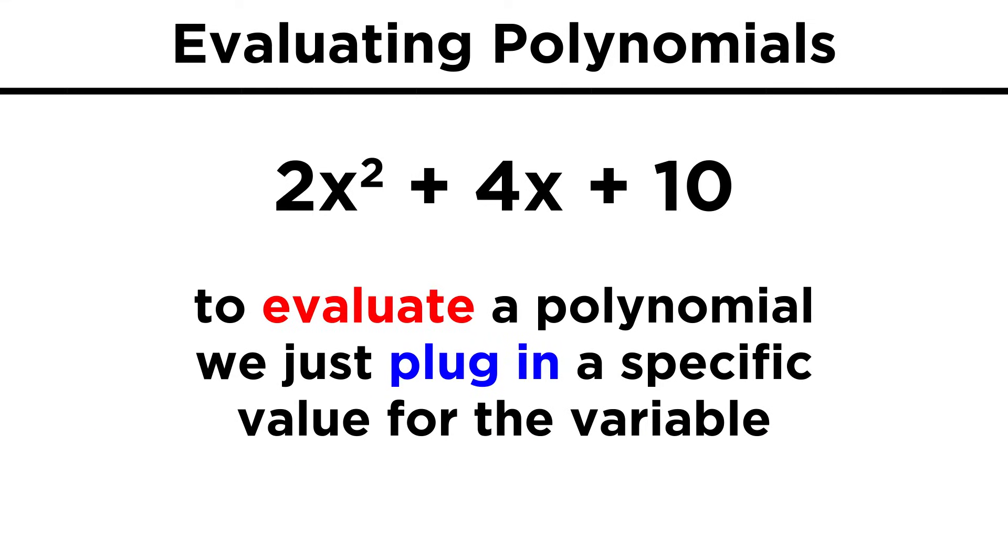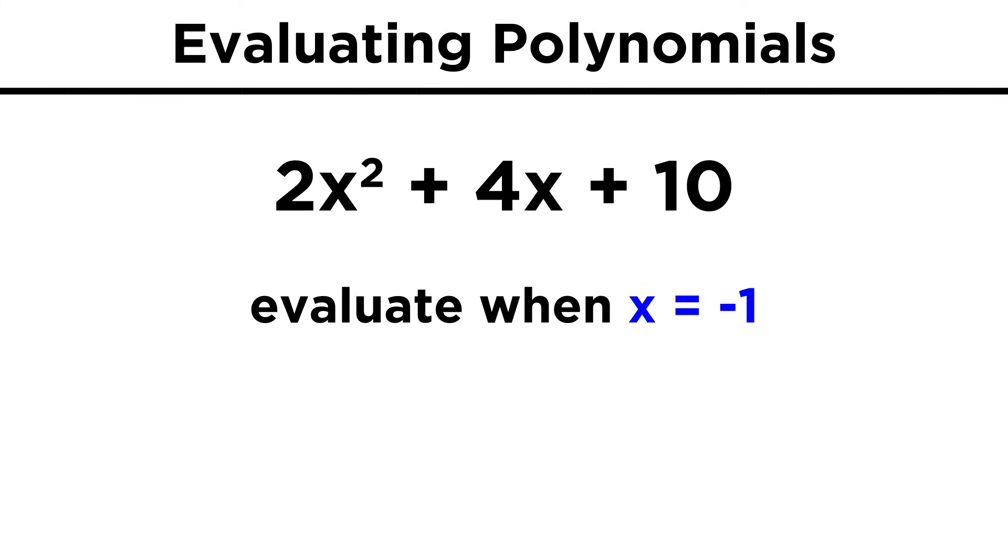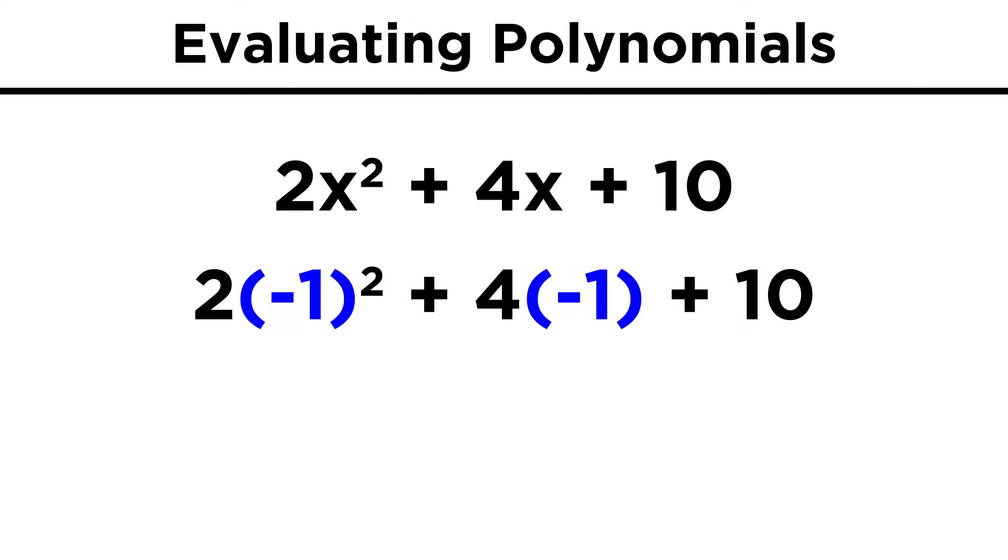If we want to evaluate a polynomial for a specific value of x, it's pretty easy. We just have to plug in that value everywhere we find x. Using the previous expression, two x squared plus four x plus ten, if we want to evaluate this when x equals negative one, we just plug it in.